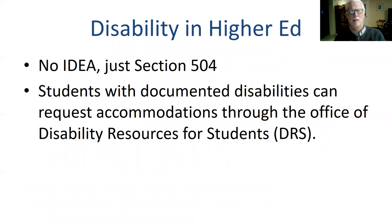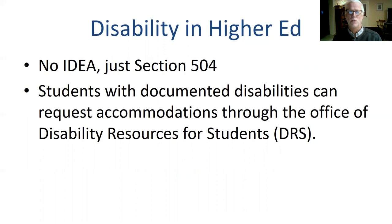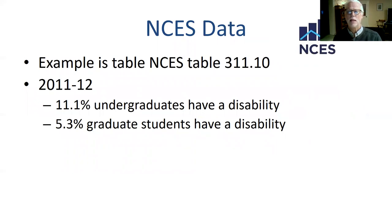Disability in higher education is another story. There's no IDEA, just Section 504. All students in higher ed have the same educational objectives, so you can't change them, but you can provide accommodations under Section 504 of the Rehabilitation Act. Students with documented disabilities can request accommodations through the Office of Disability Resources for Students — that's the name at the University of Washington, though other universities have different names. Universities are required to provide those accommodations. The actual number of students under Section 504 in higher education is unknown.